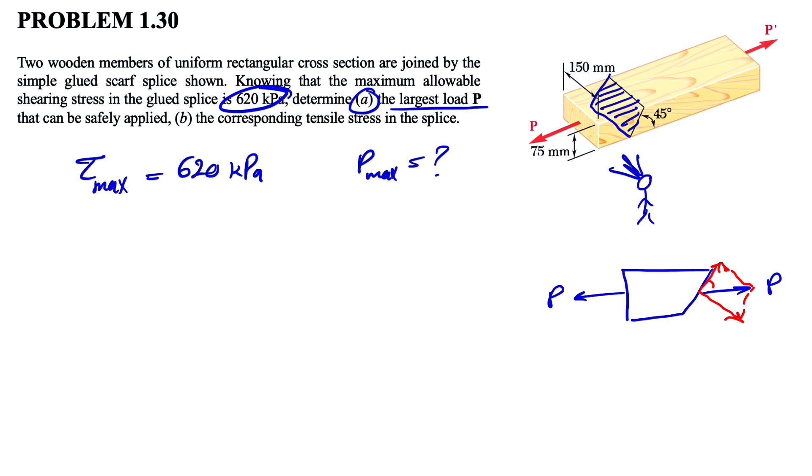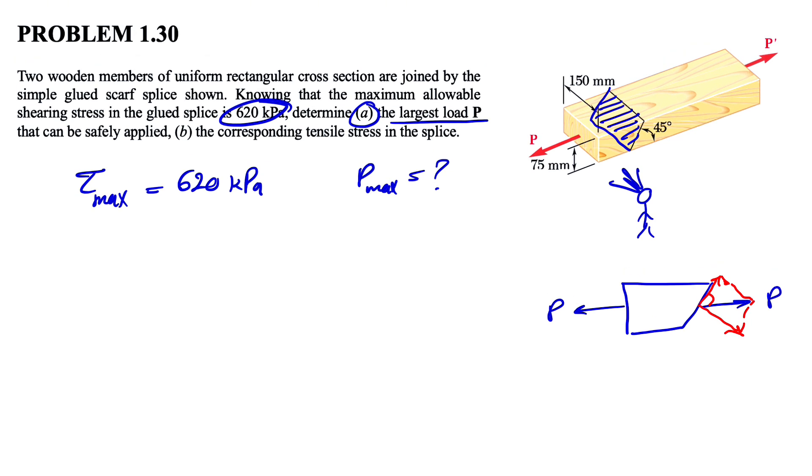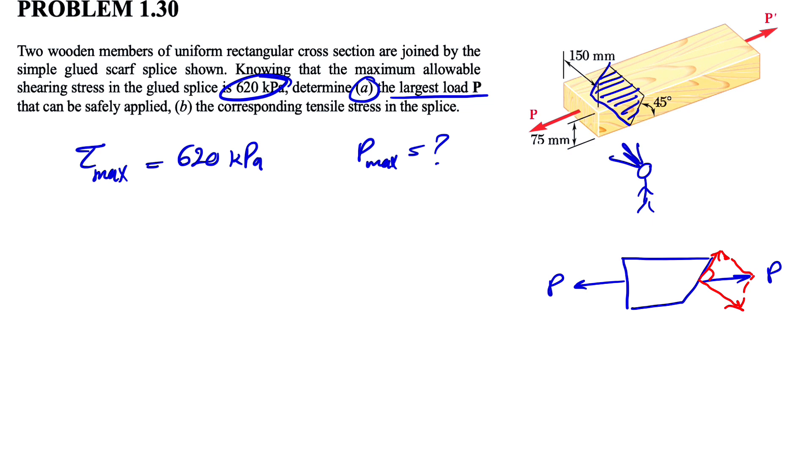We also know this angle here is 45 degrees. So if that's 45 degrees, this will be P cosine of 45 degrees and the normal force would be P sine of 45 degrees. And if we look at this, we'll see that we can find the area of this section very easily. We can call it A.